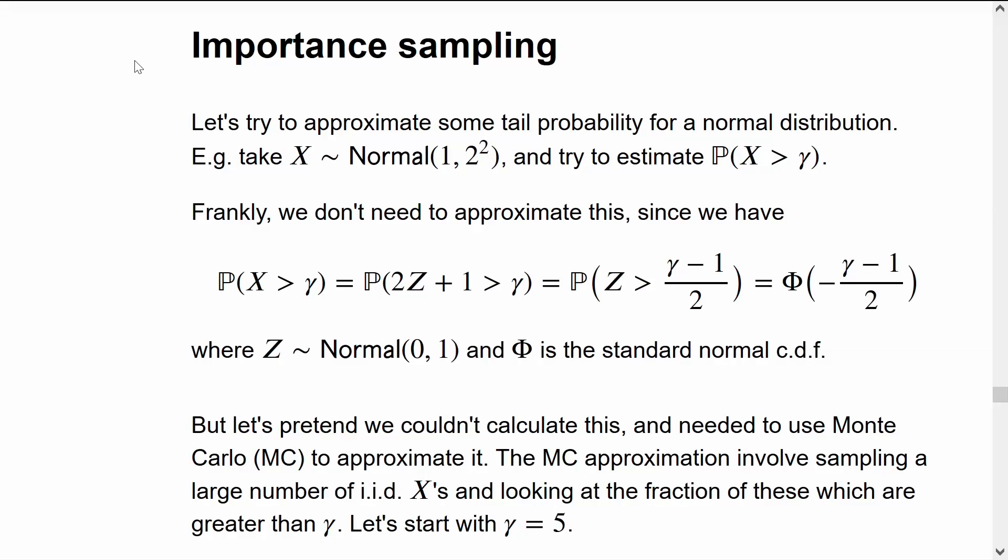Importance sampling is a very fundamental tool inside of rare event analysis. I'll demonstrate it using a very simple example, estimating the tail probability for a normal distribution. We'll take X to be normally distributed with mean 1 and variance 4, and estimate the probability that X is above the threshold gamma.